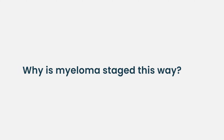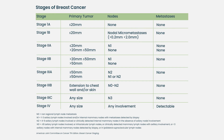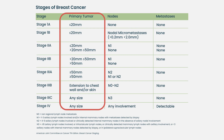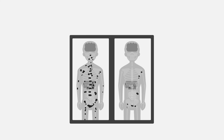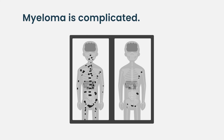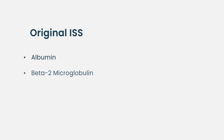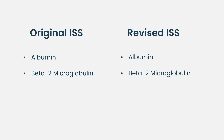A quick note about why myeloma is staged the way it is: in cases of solid tumors like breast cancer, you stage by the size of the tumor. But in myeloma, it's all over the body, so you can't stage that way. Myeloma is a complicated disease, which is why it has proven difficult to come up with a staging system that applies to all myeloma patients. The original myeloma staging took into account albumin and beta-2 microglobulin. The newest version — the revised ISS — takes into account another blood marker, LDH, and the high-risk genetics of your disease. The more we learn about myeloma, the more staging may continue to evolve.